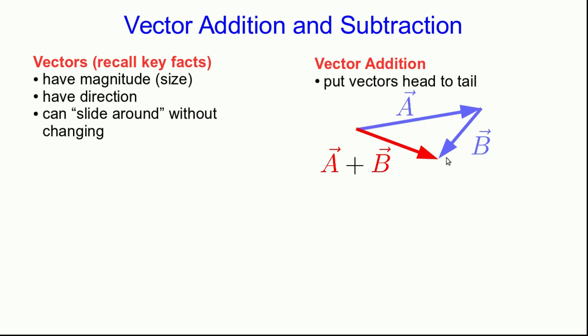A straight arrow pointing from where you started to where you finished is the sum of these two vectors A and B. What does that mean? In what sense is this addition?